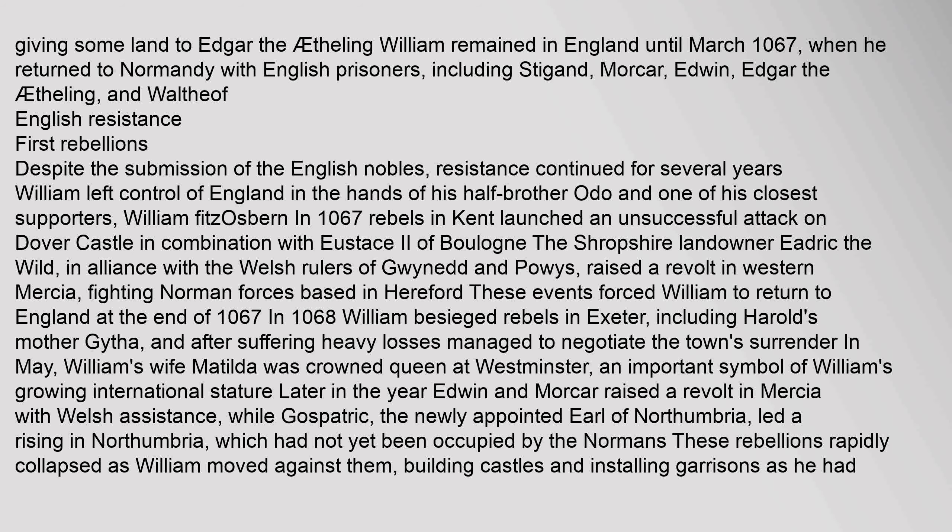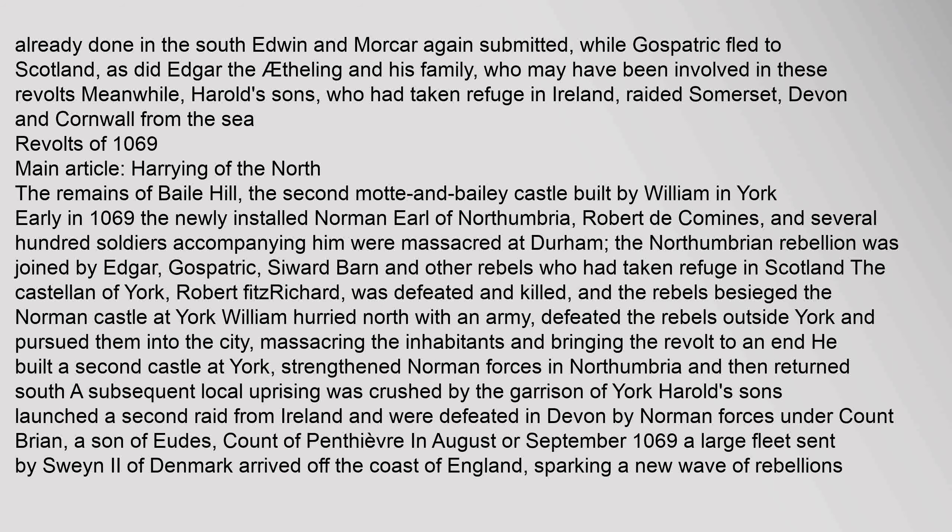In May, William's wife Matilda was crowned Queen at Westminster, an important symbol of William's growing international stature. Later in the year Edwin and Morcar raised a revolt in Mercia with Welsh assistance, while Gospatric, the newly appointed Earl of Northumbria, led a rising in Northumbria, which had not yet been occupied by the Normans. As these rebellions rapidly collapsed as William moved against them, building castles and installing garrisons, Edwin and Morcar again submitted, while Gospatric fled to Scotland, as did Edgar the Aetheling and his family.